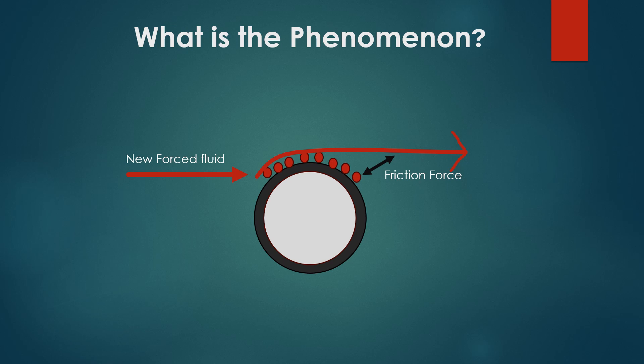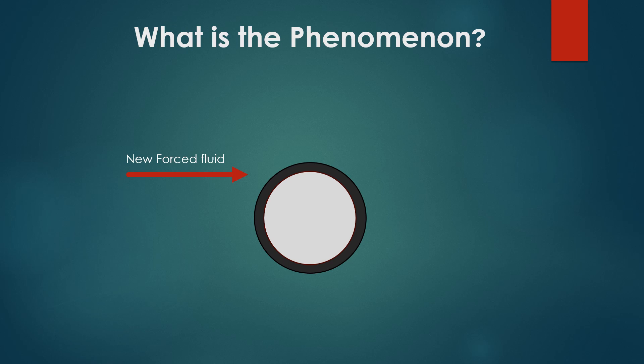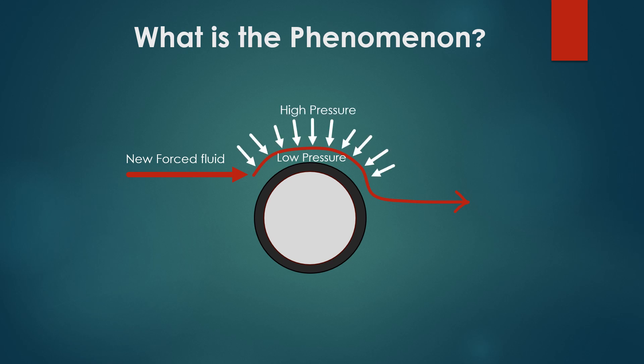As this forced fluid goes over the surface, it pushes and drags away the original fluid, removing it. This creates an area of low pressure on the surface, resulting in Newton's third law, which states there is an equal and opposite reaction. Therefore, high pressure is generated above the forced fluid, which pushes it down on the surface, forcing the fluid to follow the surface curvature of the object.